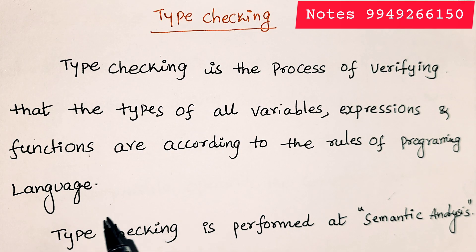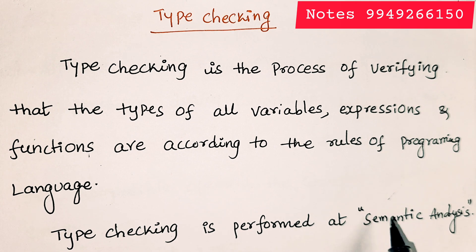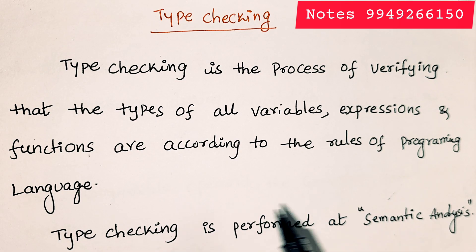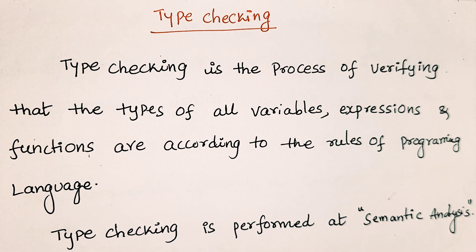One important point to remember: type checking is performed at semantic analysis. There are six phases in a compiler — the first is lexical analysis, the second is syntax analysis, and the third is semantic analysis — so the compiler performs type checking in the third phase.